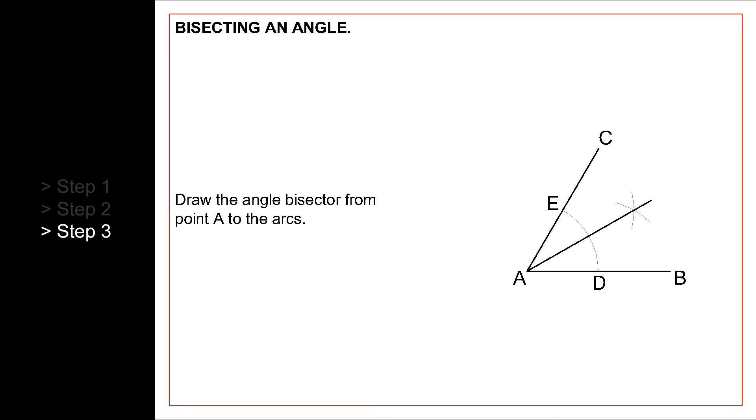Finally, draw a line from point A to the point of intersection of the arcs as shown. This line bisects angle CAB into two equal parts.